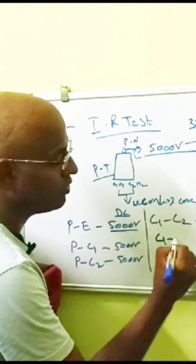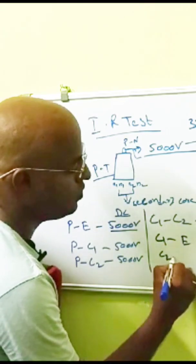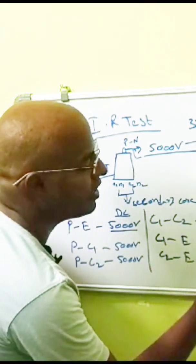Core 1 to earth, core 2 to earth. It will be 500 volt.